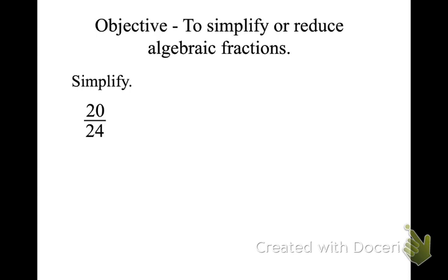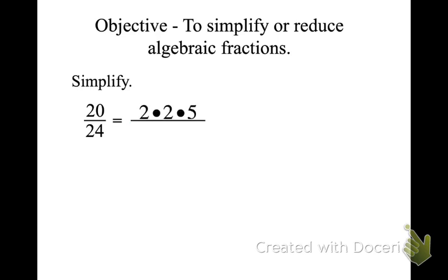We can look at all the factors that make up 20. We can go to prime factors: 2 times 10, and 10 is made up of 2 times 5. Or 24 is 2 times 12; 12 is 2 times 6; 6 is 2 times 3. We list the prime factors and then cross-cancel. Any number over itself equals 1 — so 2 over 2 equals 1. We cross-cancel those common factors. In the numerator we're left with 5 and in the denominator we're left with 6.